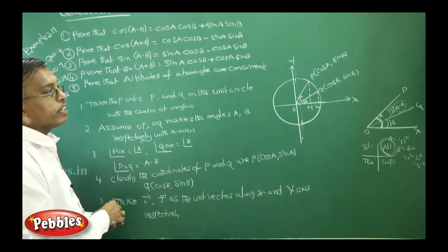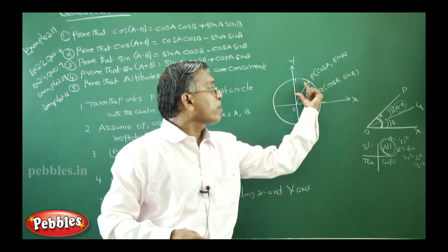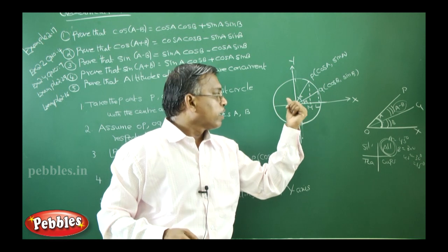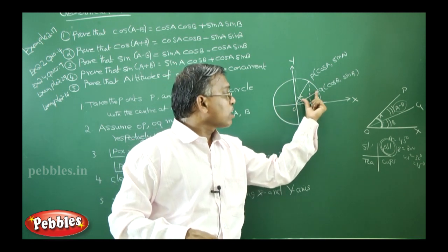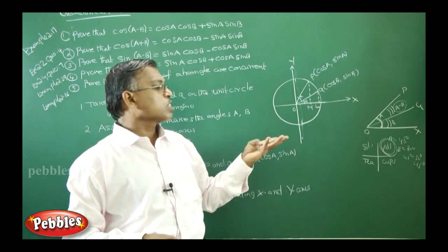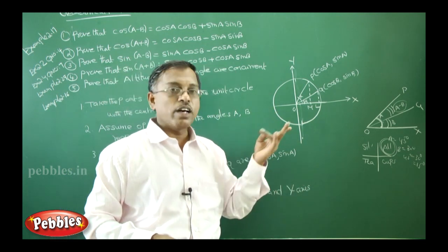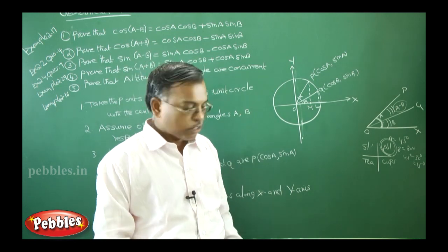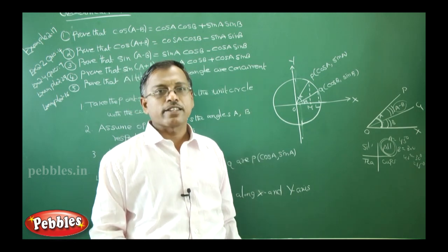Now what is the next step? You have to take OP vector in this triangle O, M, P. Next, OQ vector in this triangle O, Q, L. Then you have to use definition and also you have to use the value to find cos of A minus B. That we will see now. Other five points. Let's see.